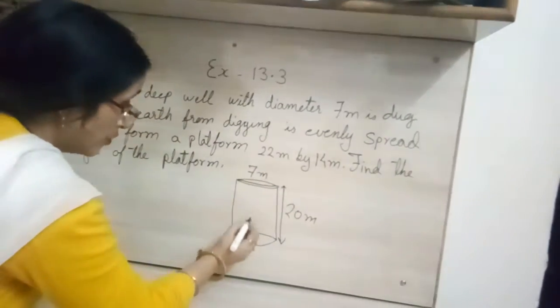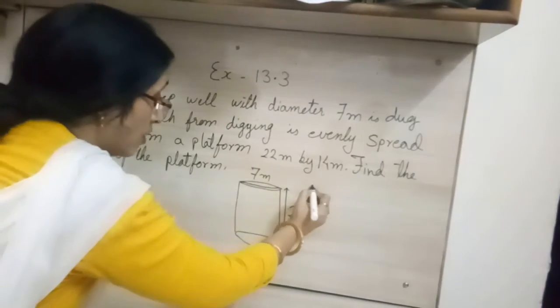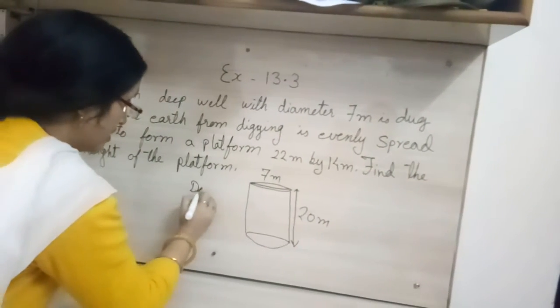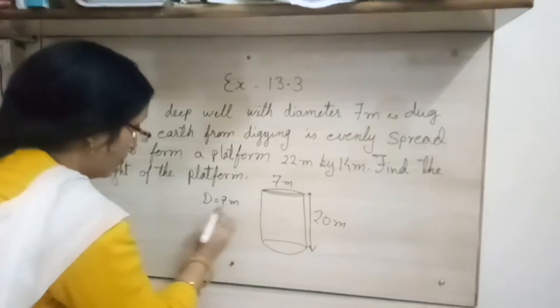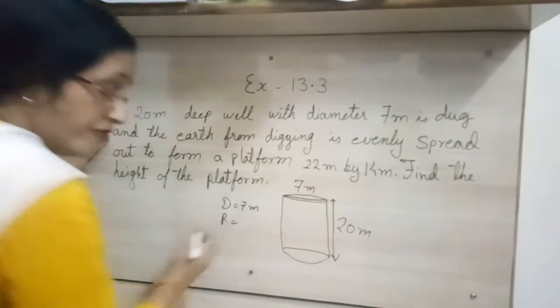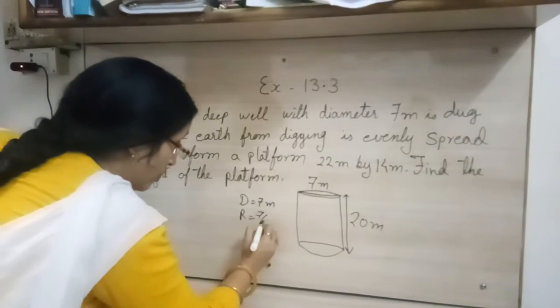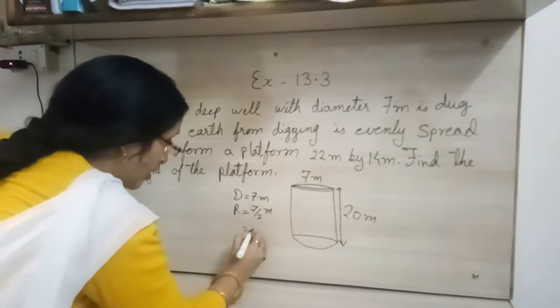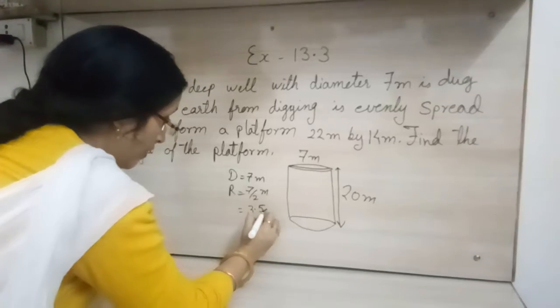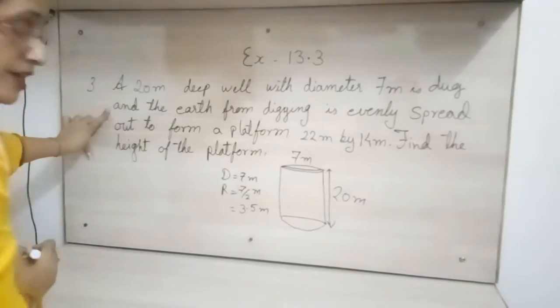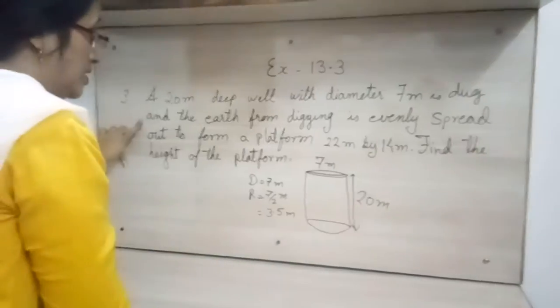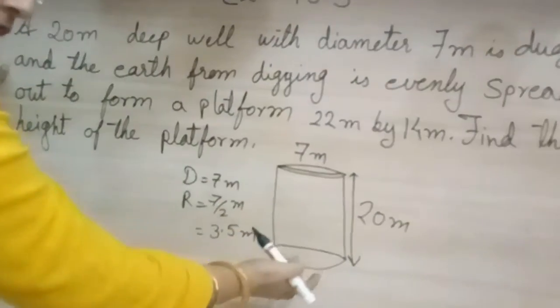This is the diameter so we will find the radius. Now they are telling that diameter is equal to 7 meter. So radius always will be half of 7 meter, means 7 upon 2 meter. So it will become 3.5 meter. So radius is 3.5 meter.